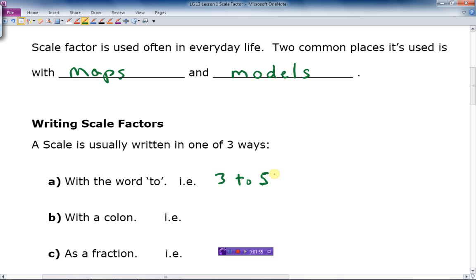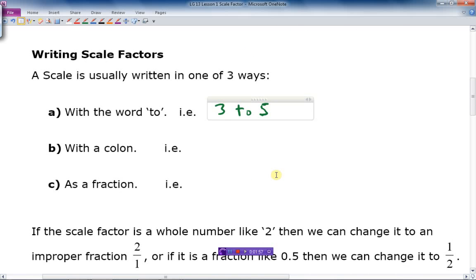Or we could write that same ratio, or scale—ratios and scales are very similar—with a colon. So a scale factor of three to five, or a ratio of three to five. Or we could use this as a fraction. As a fraction, I write the first number on top, second number on the bottom, three to five. That's exactly the same thing written in three different ways.